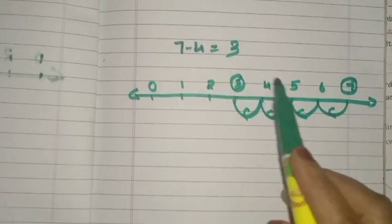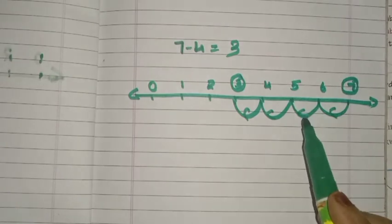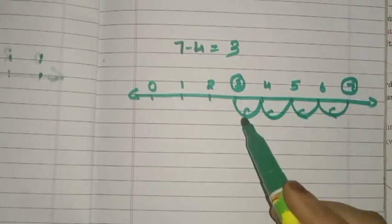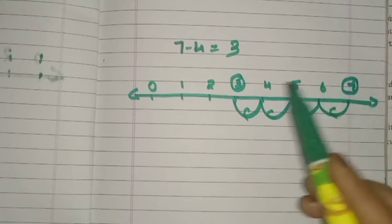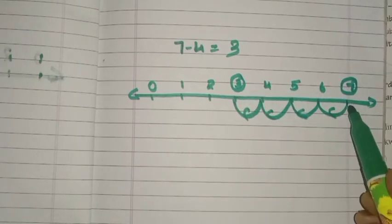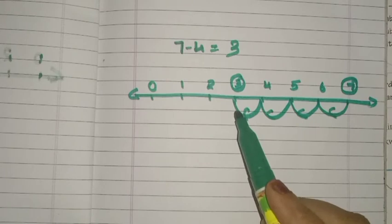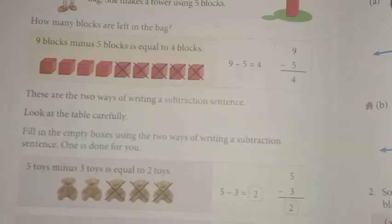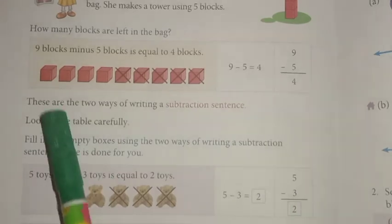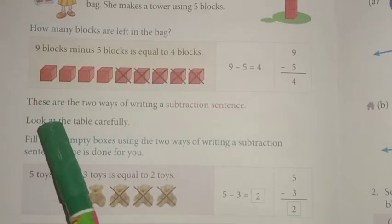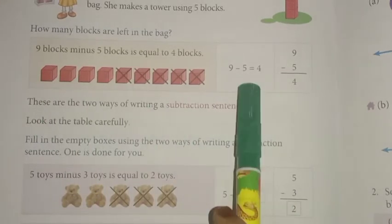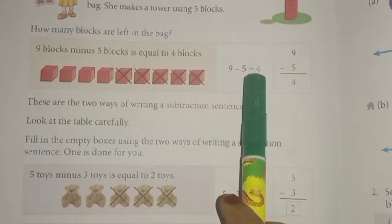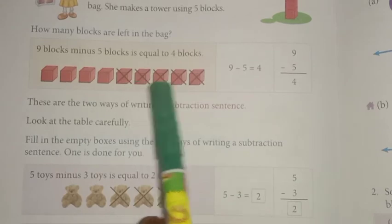Here is another method using subtraction: nine minus five. You can see here nine blocks. Five blocks are cut from the nine, so nine minus five is four. You can do the other two questions the same way.